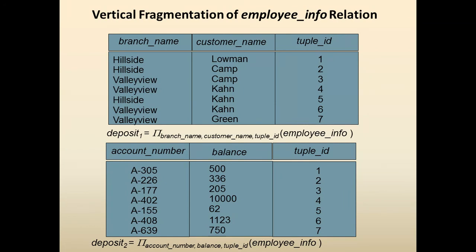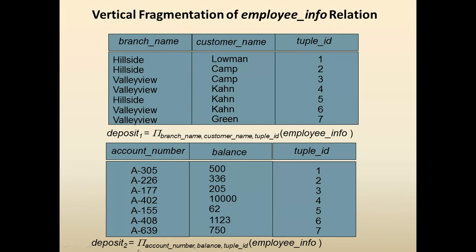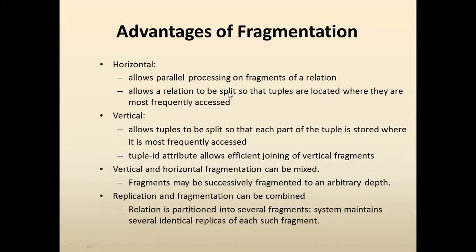For vertical fragmentation, the same account table is used but the schema is split differently. One fragment may contain branch name, customer name, and tuple ID, and another fragment may contain account number, balance, and tuple ID. The tuple ID serves as the common key across vertical fragments, and you specify the field names accordingly when writing the projection for each vertical fragment.